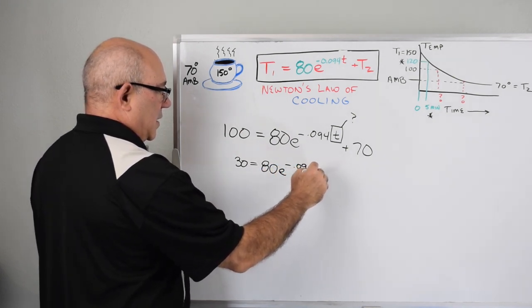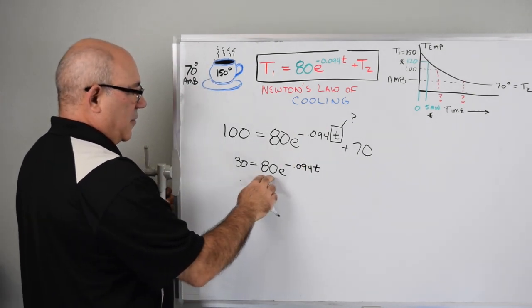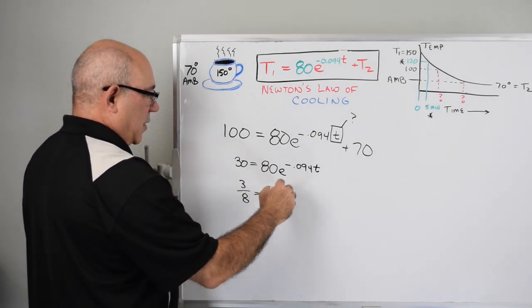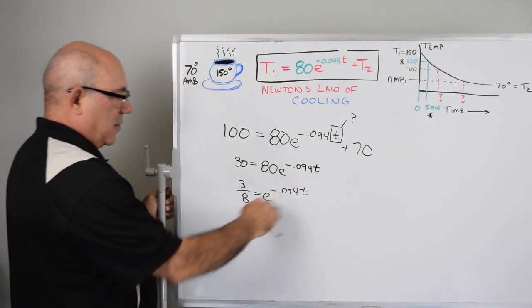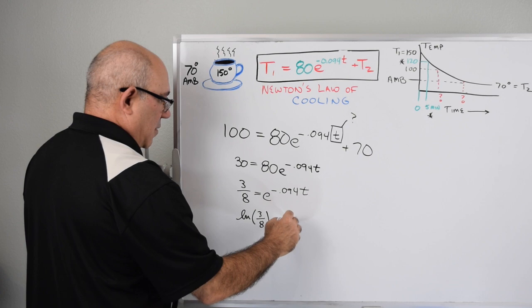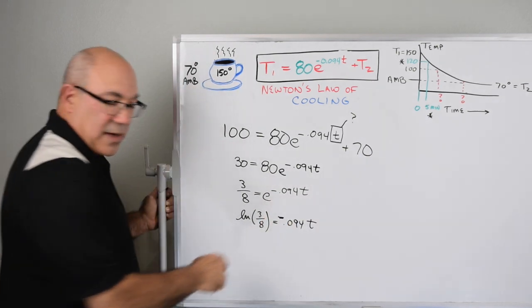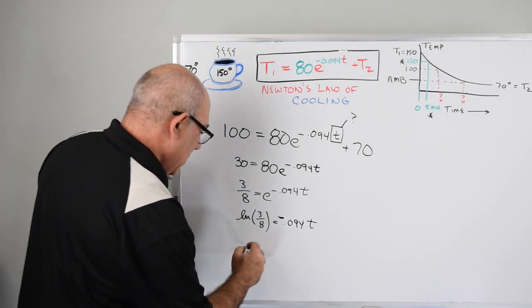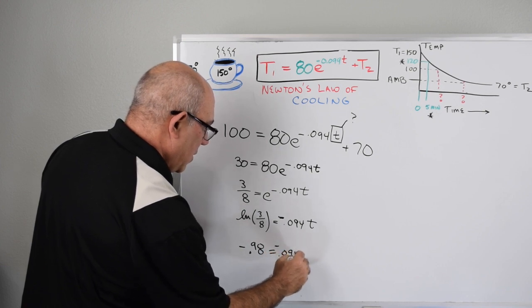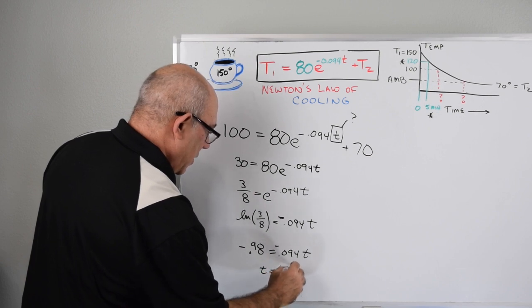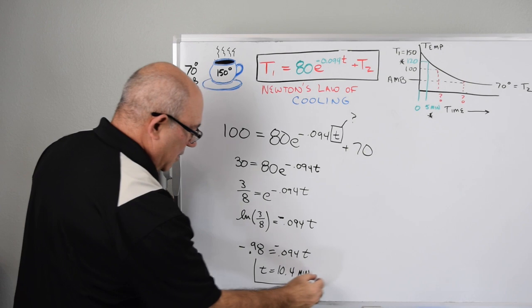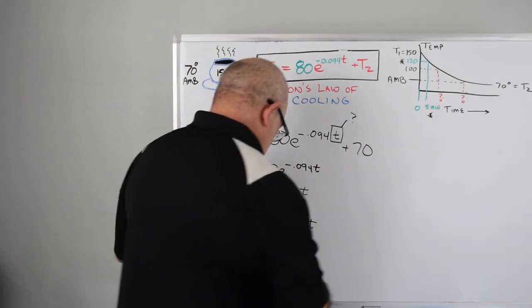We'll subtract 70 from both sides and get 30 equals 80 e to the minus 0.094 t. Divide by 80 and we'll factor out a 10, so we get 3 eighths equals e to the minus 0.094 t. We solve this using logarithms, so the natural log of 3 eighths equals minus 0.094 t. This value here is minus 0.98 equals minus 0.094 t.